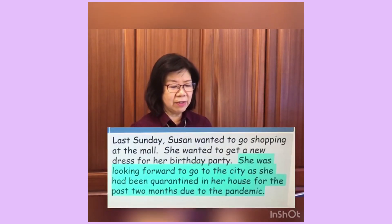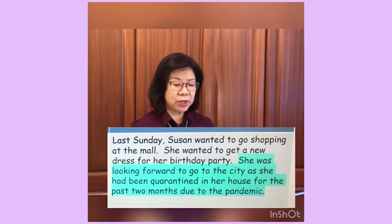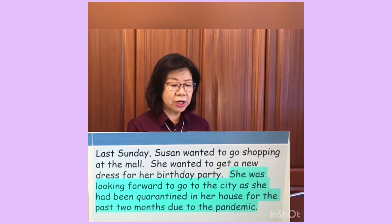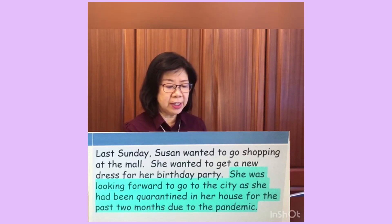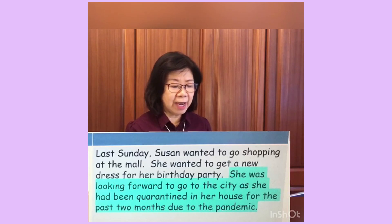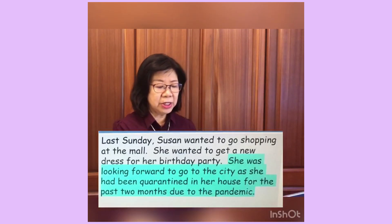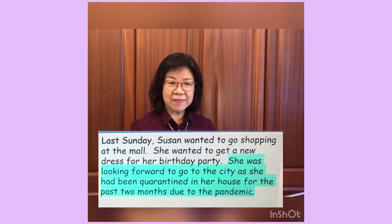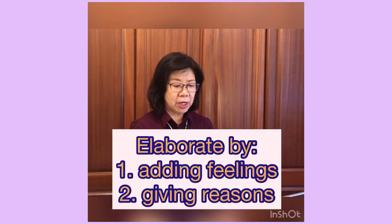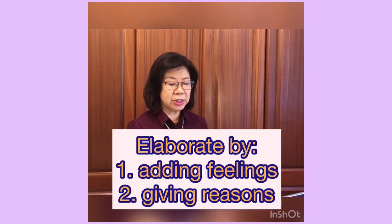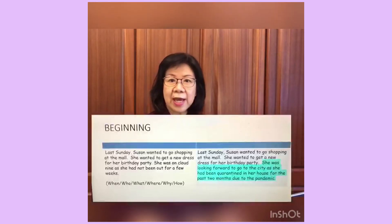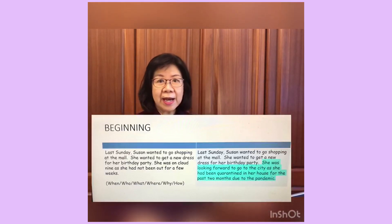Now to take it to the next level, look at the one on the right. The expanded version reads: 'Last Sunday, Susan wanted to go shopping at the mall. She wanted to get a new dress for her birthday party. She was looking forward to going to the city as she had been quarantined in her house for the past two months due to the pandemic.' So I'm adding something very current here — adding the feelings and the reason why she wants to go out, because she had been quarantined for so long. I've added just one or two sentences, and you'll be fine.